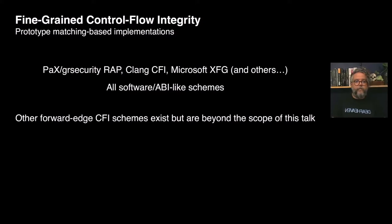Some software CFI schemes successfully implement prototype matching policies. Some of them are PaX GR Security WRAP, Clang CFI, and Microsoft XFG. These schemes are implemented in software and materialized in the form of pseudo-ABIs. WRAP uses tags hard-coded in binary to mark valid branch targets. Clang CFI uses intermediate jump tables with sets of valid targets. XFG passes a hash via a register to an intermediate dispatcher that checks for hard-coded tags. Other schemes for forward-edge CFI, like pointer authentication, do exist but are beyond the scope of this talk.